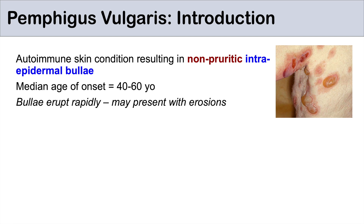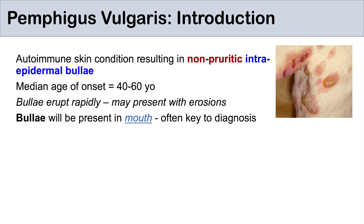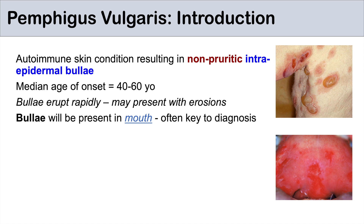Pemphigus vulgaris can be a lethal condition, so we want to make sure we get the diagnosis correctly. If you see a patient come in with bullae, check their mouth. With pemphigus vulgaris, this is often key to making the diagnosis. Most often, bullae will be present within the mouth around 90% of cases. Because these bullae may erupt, you might not see the bullae in the mouth but you'll see erosions, like in this picture here.